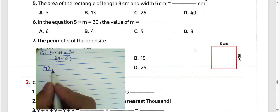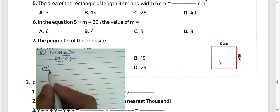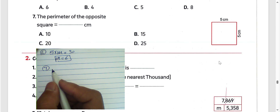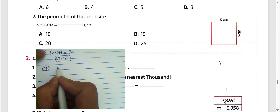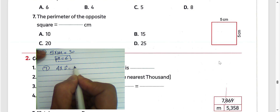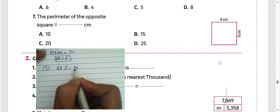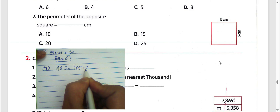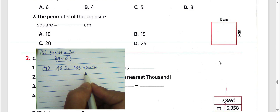Question number 7: the perimeter of a square. The perimeter of a square equals 4 times the side length. The side length here is 5. Then the perimeter will be 20 centimeters.